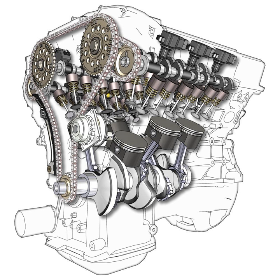Configurations of two-cylinder engines include: the straight twin engine, or parallel twin, with two cylinders in parallel sharing a crankshaft; the V-twin engine, or V-2, with two cylinders in V-configuration sharing a crankshaft; and the flat twin engine, a flat engine with two opposed cylinders on the same crankshaft angled 180 degrees to each other.